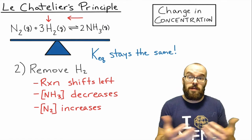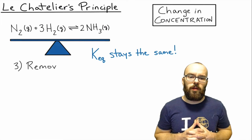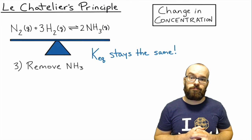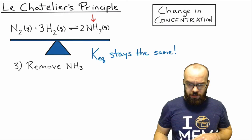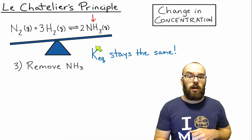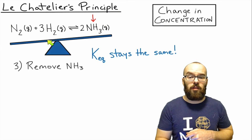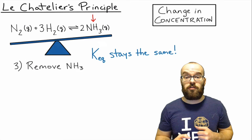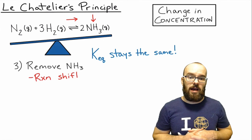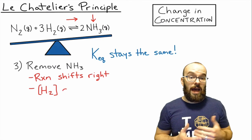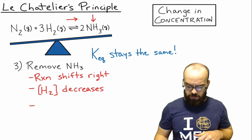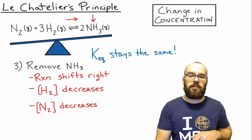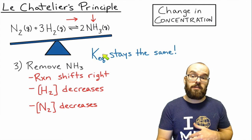Finally, what if we remove ammonia? The NH₃ concentration goes down, causing the seesaw to become unbalanced — it falls on the left side because there's suddenly less NH₃ weighing down the right. So the reaction shifts toward the right to balance back out. This causes hydrogen and nitrogen concentrations to decrease, and the ammonia concentration goes back up to restore the same equilibrium constant ratio.